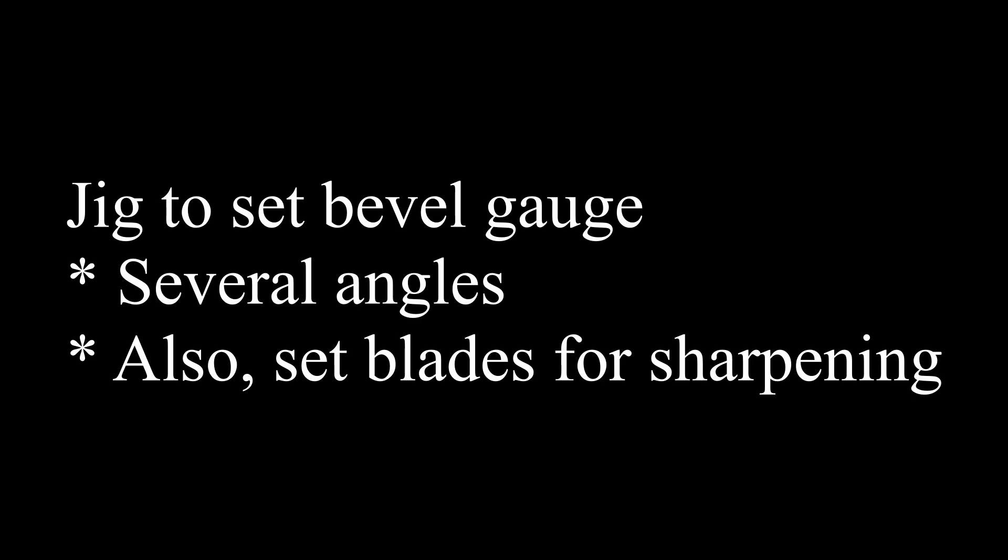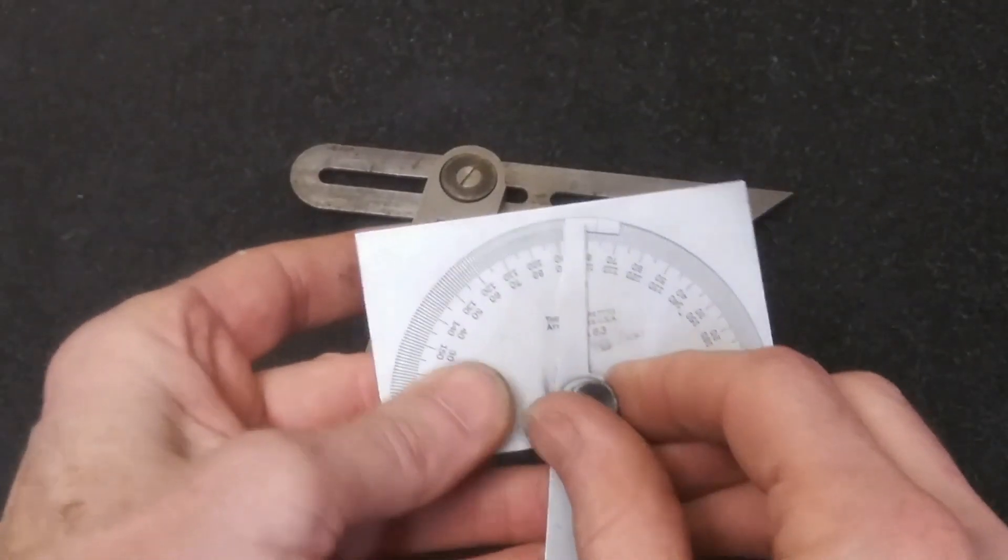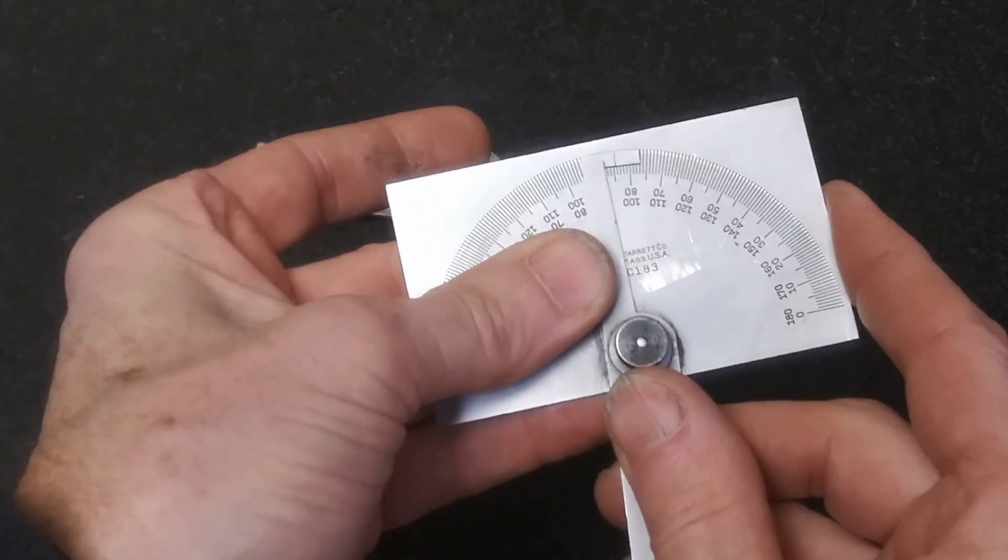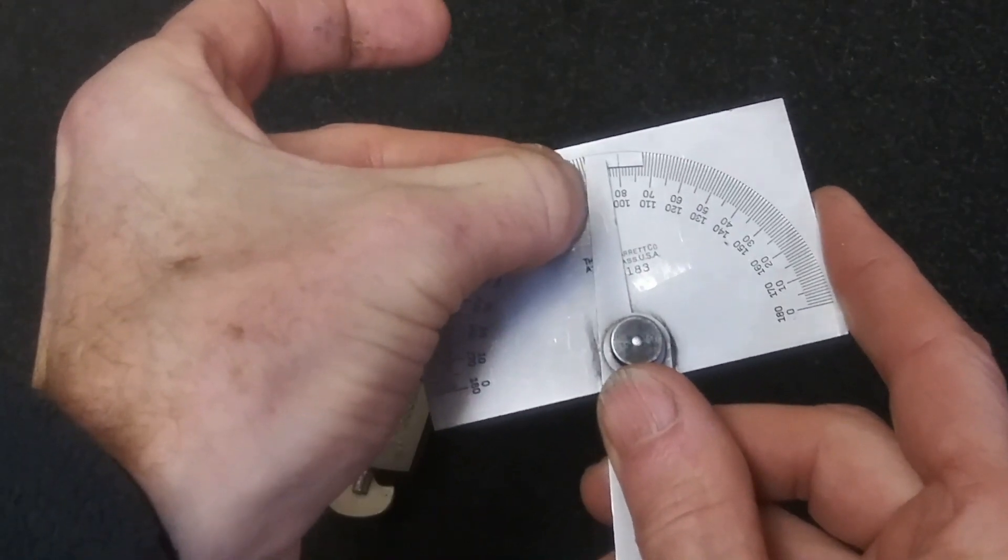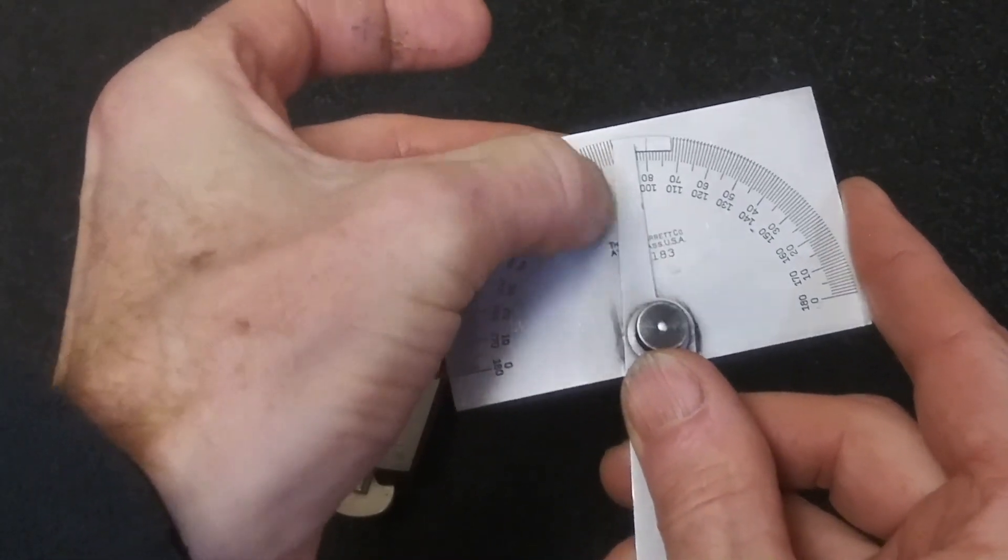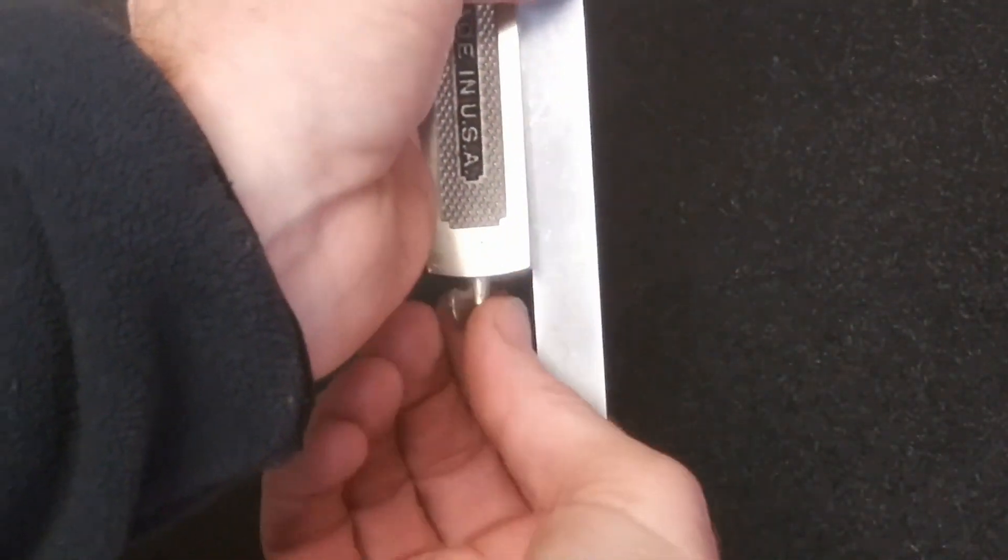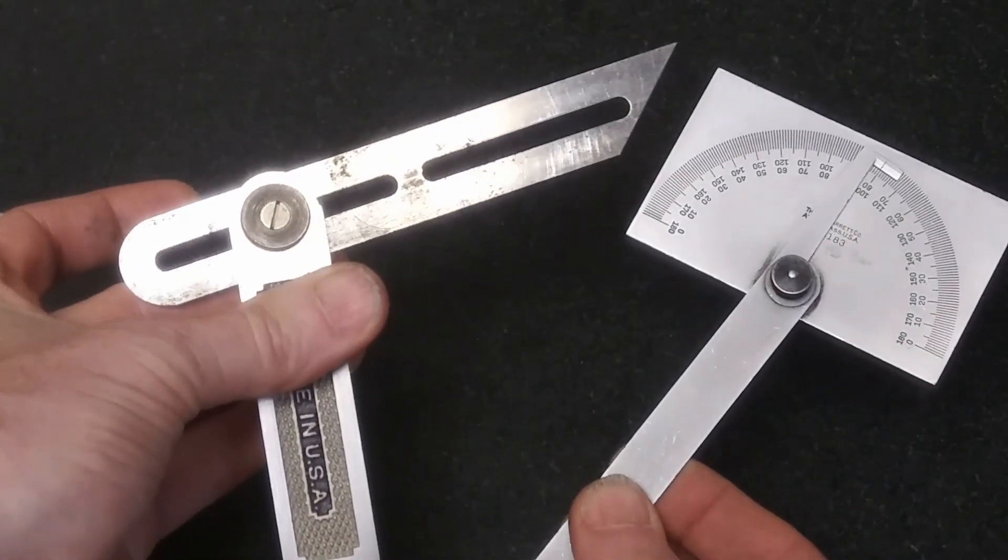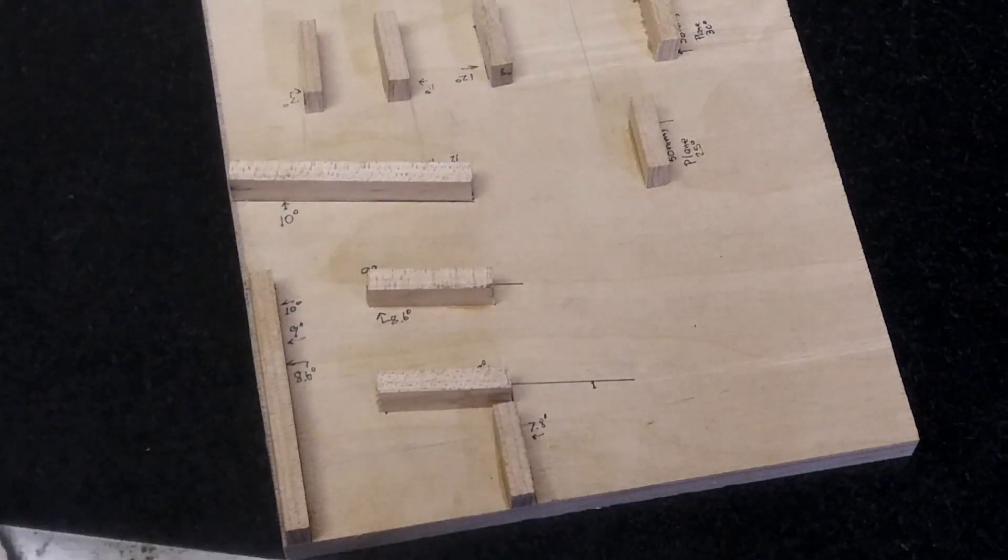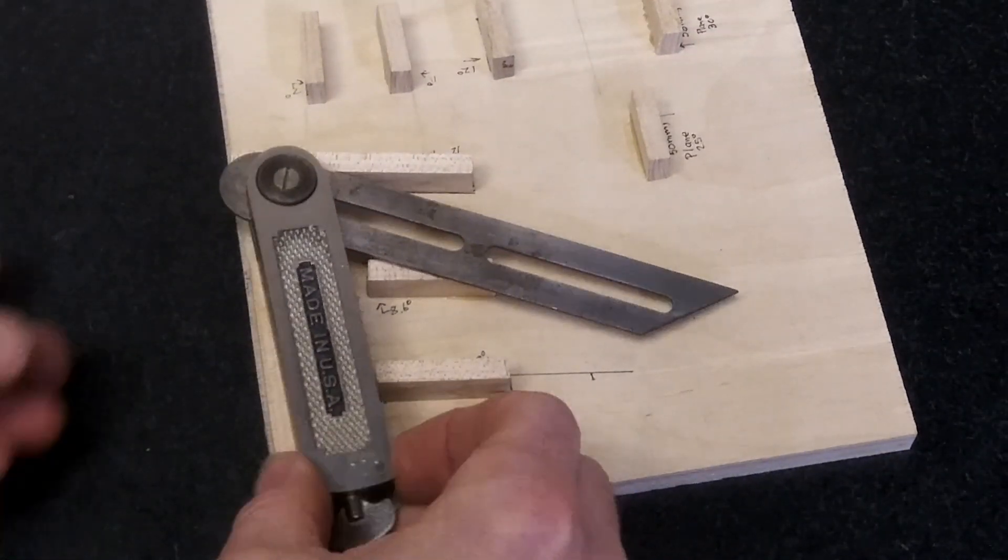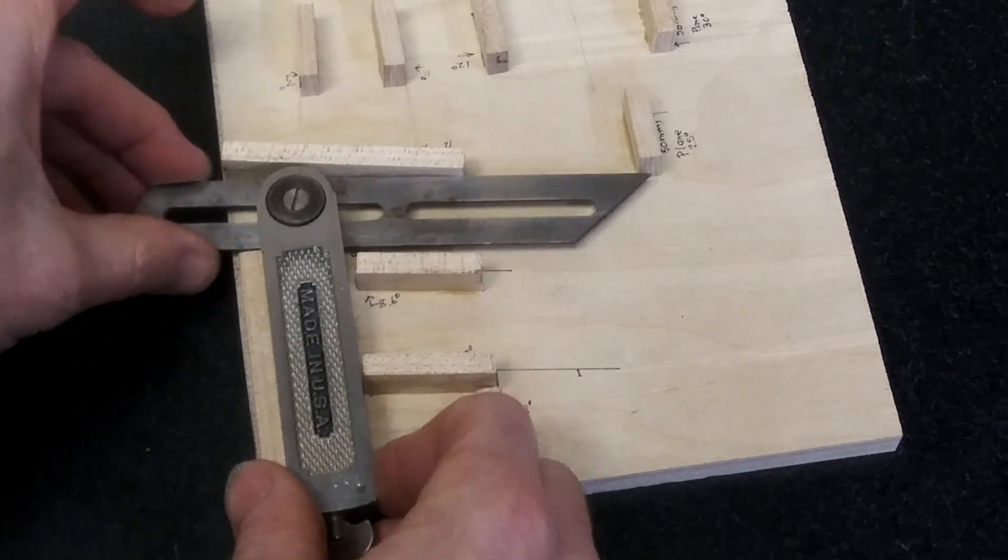The first one is that I like to use my bevel gauge and I find it really tedious to set my protractor to my angle perfectly. If I do, I can set my bevel gauge pretty quick like that, but it's very tedious. So I made this little jig so I can lay my bevel gauge in here.